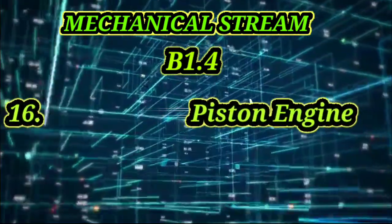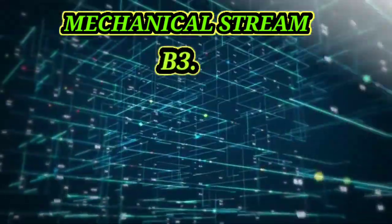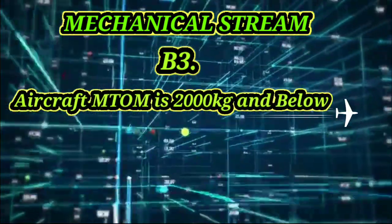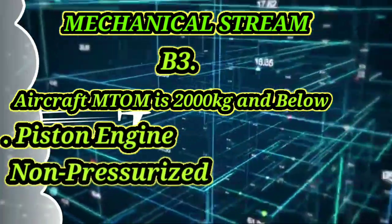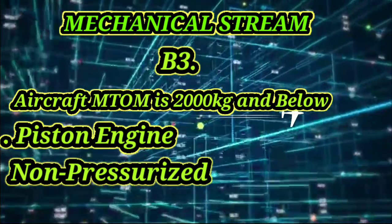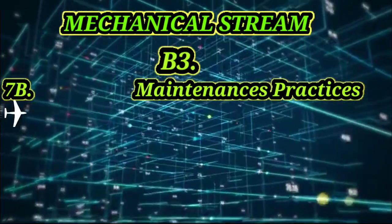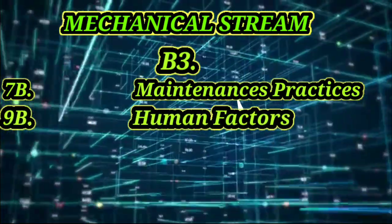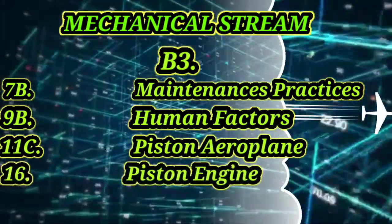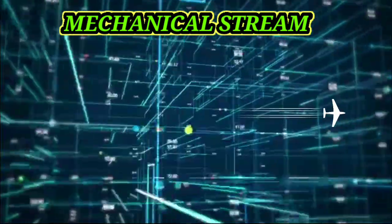Now for B3 — for aircraft having a maximum take-off mass of 2,000 kg and below, which is piston engine non-pressurized aircraft — modules 3 to 6 are similar to the other categories. The differences are: Module 7B – Maintenance Practices, Module 9B – Human Factors, Module 11C – Piston Aeroplane, Module 16 – Piston Engine, and Module 17B – Propellers.